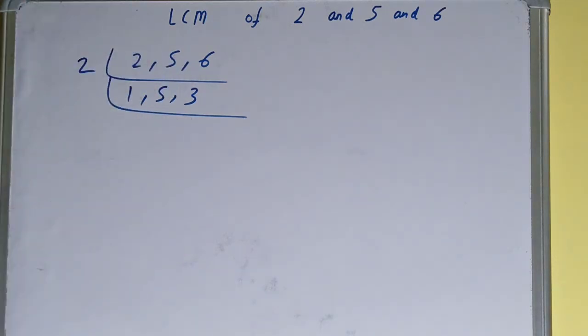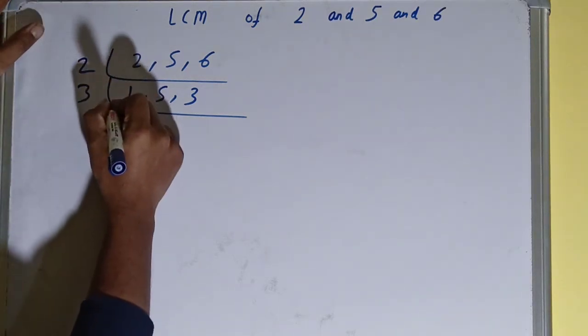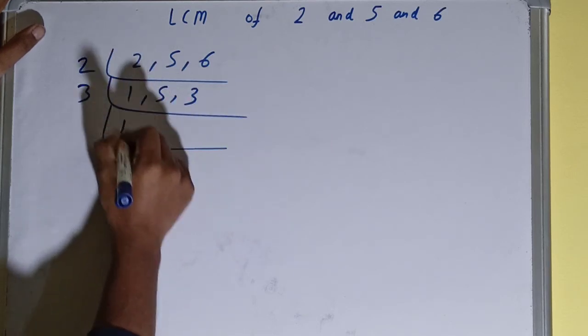So we'll go to the next lowest prime number, that is 3. And this is divisible by 3, so divide it. We'll be getting 1. This is not divisible, this will remain 5, and this will be 1.